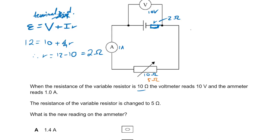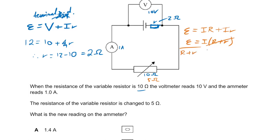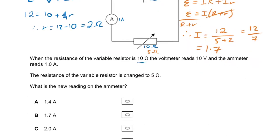Now we do the equation again to find the current when the load resistance changes to five ohms. EMF equals I times R plus I times little r, which factorises to I times (R plus r). So the new current equals 12 divided by (5 plus 2), which is 12 over 7, giving us 1.7 amps. The answer is B.